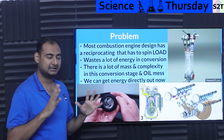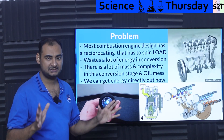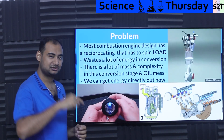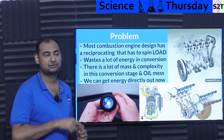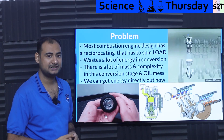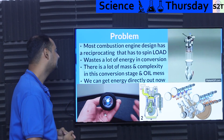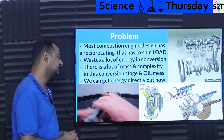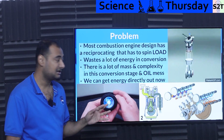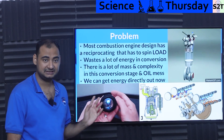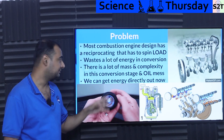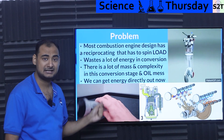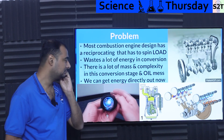In physics it's simple: whenever you are changing something, you're going to waste some energy. So if you are changing reciprocating motion into rotational, you will spend energy on that. And it adds a lot of mass and complexity. Even if the energy loss is not an issue, mass and complexity are — complexity for manufacturing, mass for your power-to-weight ratio.